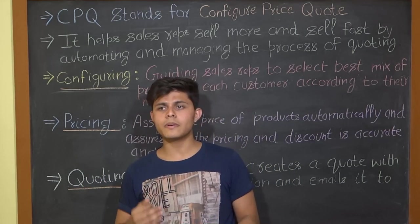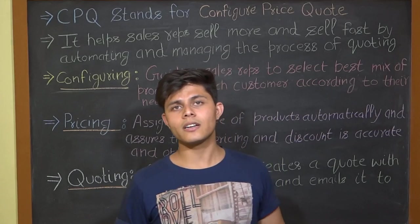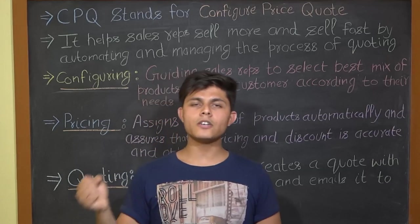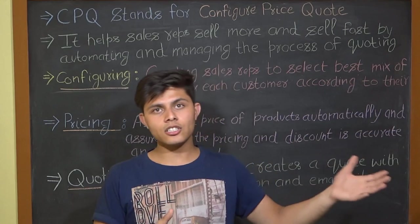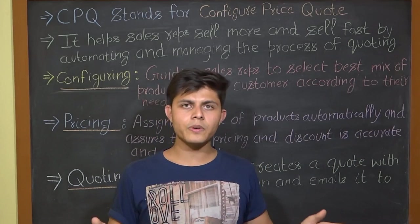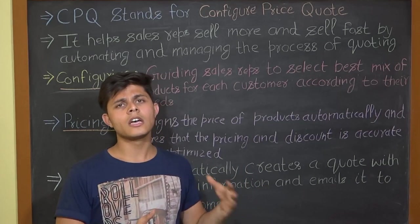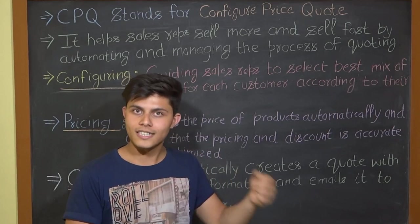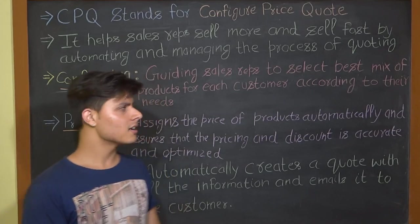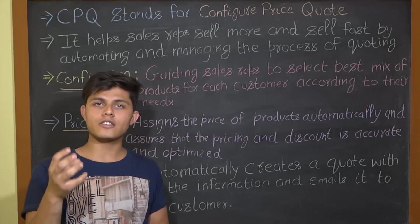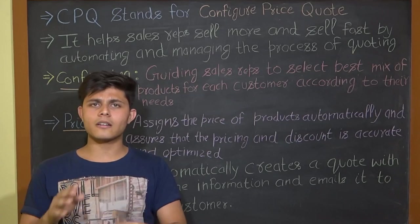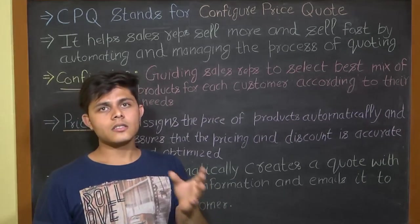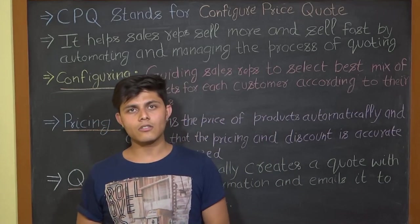CPQ also automatically controls the level of discounts — based on company size, company revenue, and other factors — so you don't need people to manually review all discounts. In the traditional process there was a lengthy review period, but with CPQ you can simply control the amount of discount sales reps are allowed to give to close the deal. This manages everything related to pricing: list prices, discounts, and final amounts.